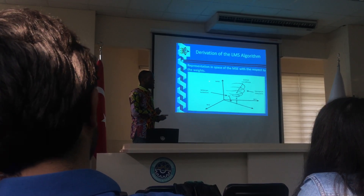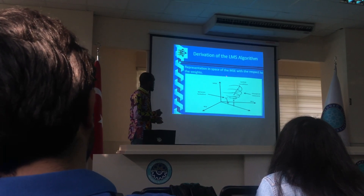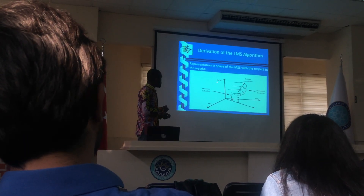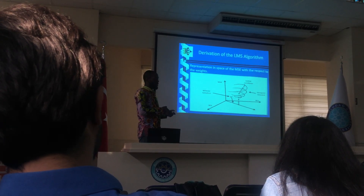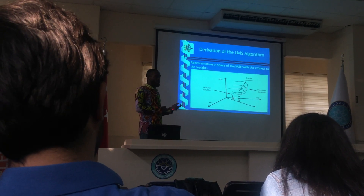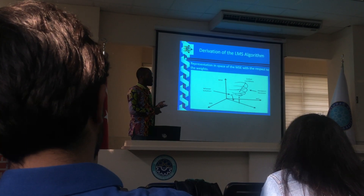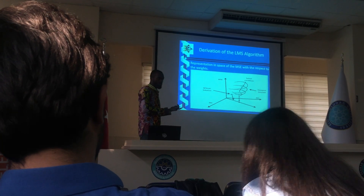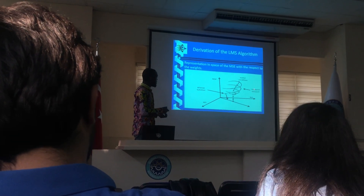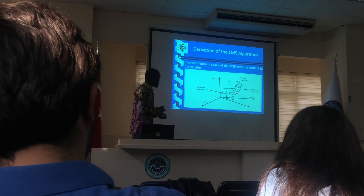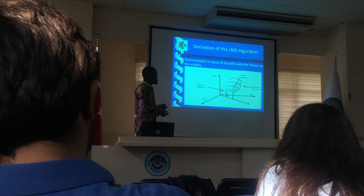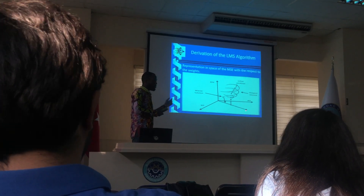Our main aim is to obtain the minimum error, and to achieve that we use a method called steepest descent. The mean square error is a function of the weights, so we can represent it in a weight-space surface. With two weights W1 and W2, this forms a paraboloid. The steepest descent method tells us that the weight value situated at the bottom of the paraboloid generates the minimum mean square error.